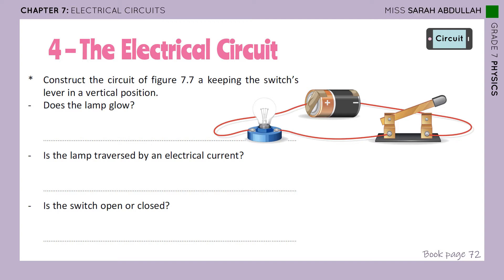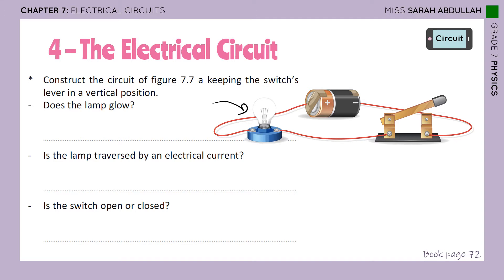Construct the circuit of the adjacent figure, keeping the switch's lever in a vertical position. You can see the lever is in a vertical position — it is pushed up. Does the lamp glow? No, it does not. Is the lamp traversed by an electrical current? If the lamp doesn't glow, it means it is not traversed by an electrical current, so there is no electricity flowing through it.